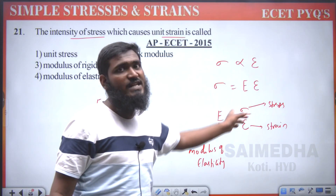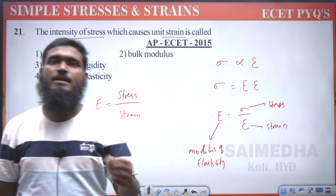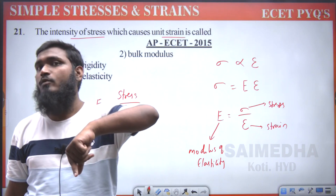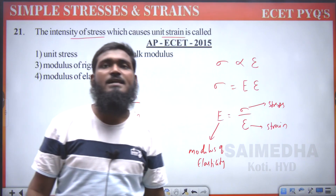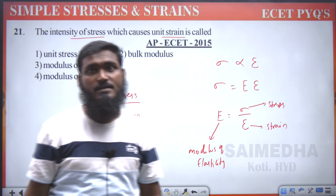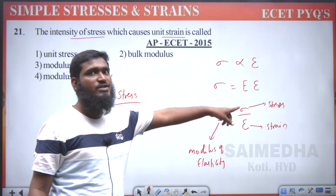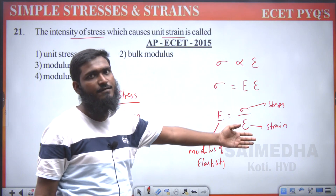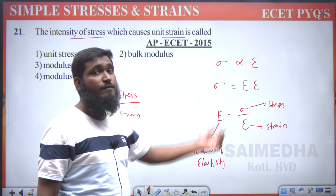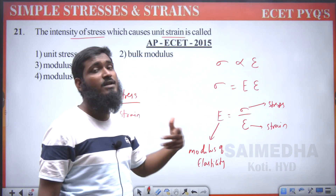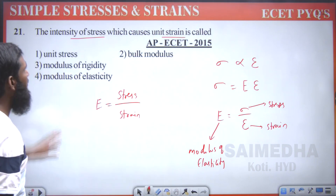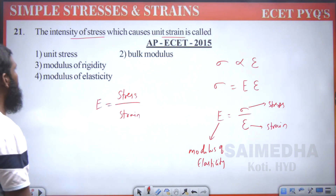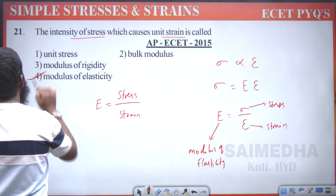Direct stress divided by direct strain — tensile or compressive — we call modulus of elasticity. If you have shear stress divided by shear strain, we call it modulus of rigidity. Here, since we are discussing normal intensity of stress causing unit strain — direct stress and direct strain — we go with modulus of elasticity. Fourth option is correct.